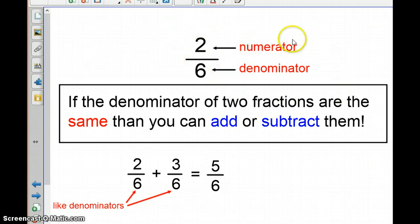So this right here is an example of a fraction, okay? This fraction is 2 sixths. So let's review. The top number is the numerator. The bottom number is the denominator.